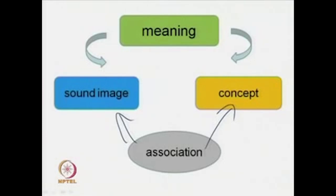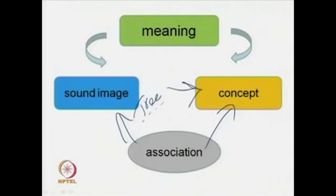The association between the sound image and the concept, the association between the signifier and the signified, is what gives us the meaning. For instance, if we have a sound image — I say the word 'tree,' or I write the letters T-R-E-E — this is a written image, marks on the slide. The moment I utter the word tree or write down tree, it will create a psychological impression in our minds, which is the concept. And then we may think of a tree, or if you are in computer science, you may think of some kind of tree structure.